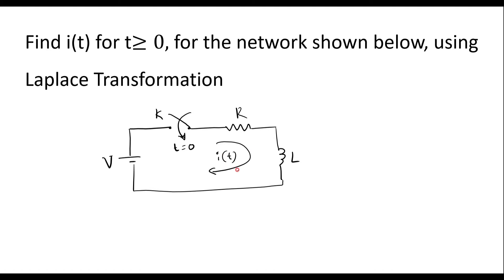Here is the given circuit. R and L are connected in series, so this is an RL series circuit. Current I of t is flowing in the circuit and the applied voltage is V. We have a switch, and right now the switch is open. At t equal to 0 the switch will be closed. When the switch is open, current in the circuit is 0, that is I of t is equal to 0 for t less than 0.